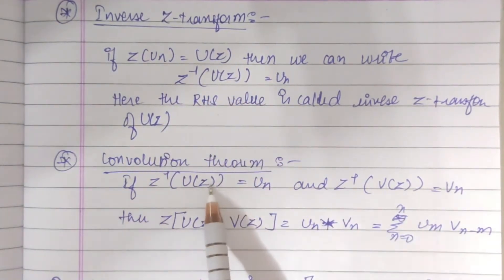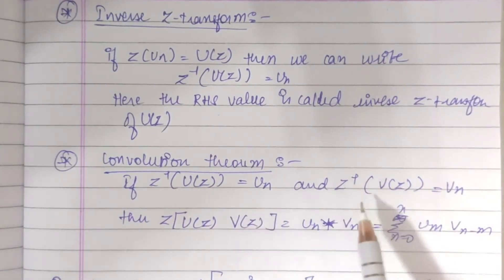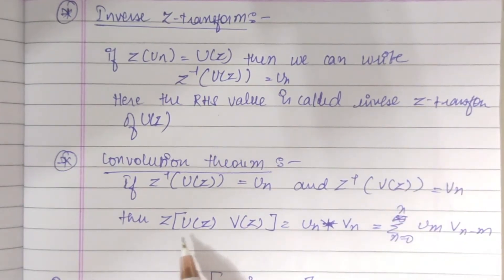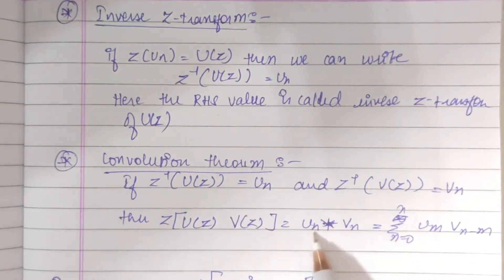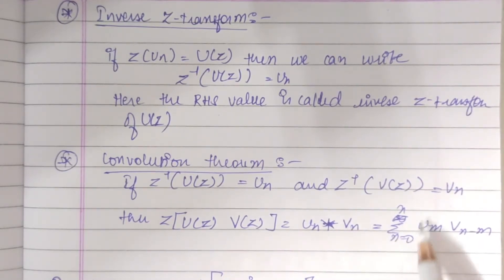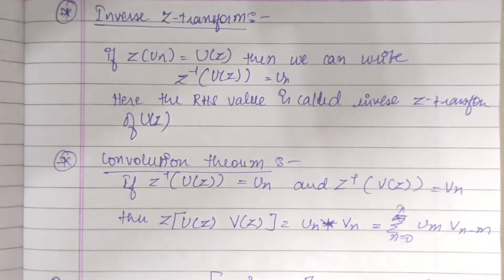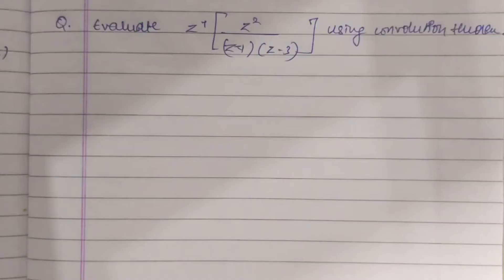Now the convolution theorem: if Z⁻¹ of U(z) is equal to u(n), and Z⁻¹ of V(z) is equal to v(n), then Z⁻¹ of U(z)·V(z) is equal to u(n) * v(n), that's equal to the summation from m=0 to n of u(m)·v(n−m). Here the star is nothing but the convolution product.